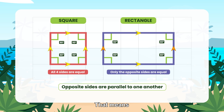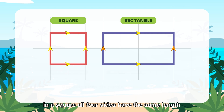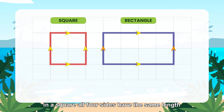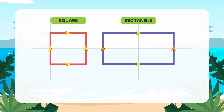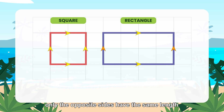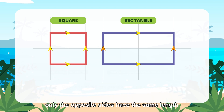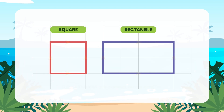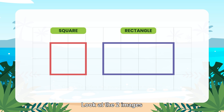That means in a square all four sides have the same length. In a rectangle, only the opposite sides have the same length. Look at the two images.